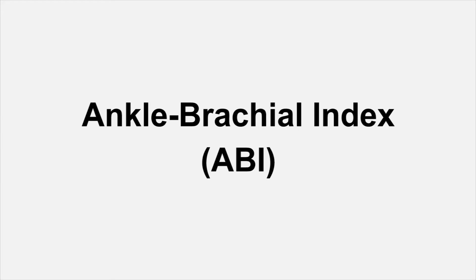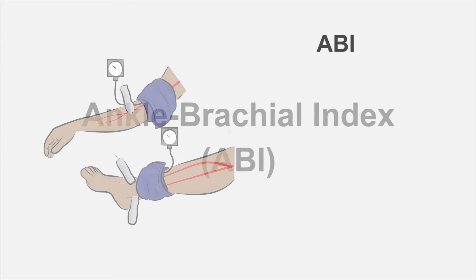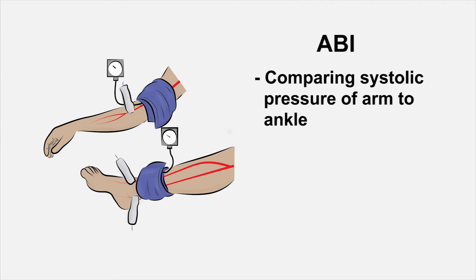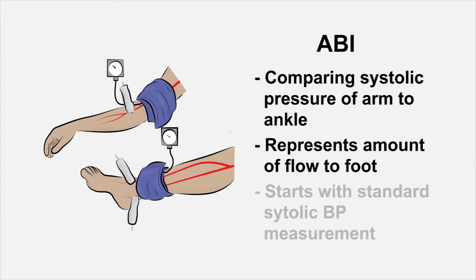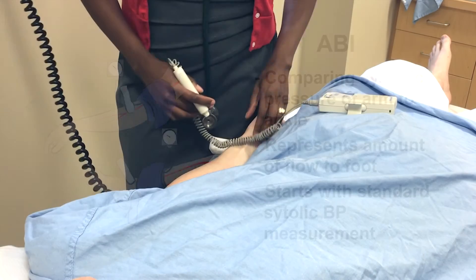Now we'll complete the examination of the ankle brachial index, or commonly called the ABI. The ABI involves comparing the systolic pressure felt at the level of the arm to that of the ankle, and it represents the amount of flow that the foot theoretically is seeing. An ABI starts with taking a standard systolic blood pressure with your stethoscope and your cuff, which we've already performed in this patient.